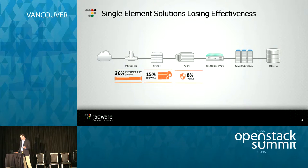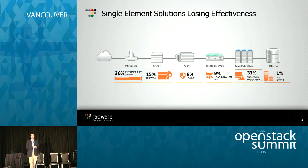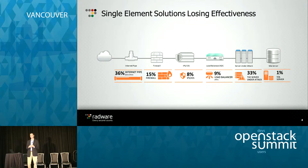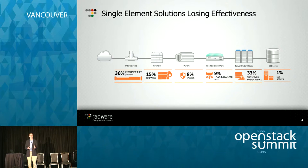Looking at recent research on which elements in the chain are being attacked, there's no longer any single element taking the brunt of most attacks. A third are going after the internet pipe, but also a third are going after the server and applications. This starts to get into the notion of using the entire network and all of its telemetry from an SDN and OpenDaylight controller standpoint to determine the best place to fight an attack, because no single box will be able to combat it.